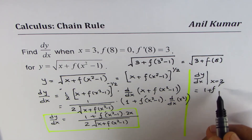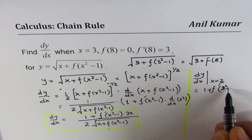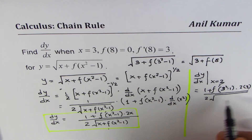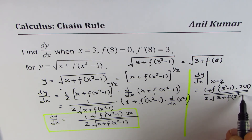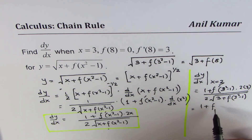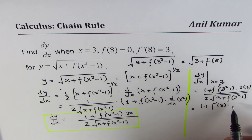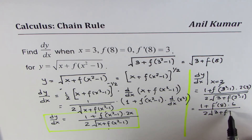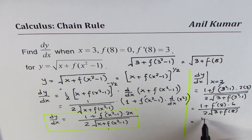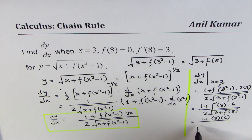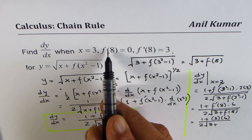Replacing x with 3, we get 1 plus f′(3² − 1) times 2 times 3, over 2 times the square root of 3 plus f(3² − 1). Since 3² − 1 is 8, this becomes 1 plus f′(8) times 6, divided by 2 times the square root of 3 plus f(8). We are given f′(8) equals 3 and f(8) equals 0, so we replace those values: 1 plus 3 times 6, divided by 2 times the square root of 3 plus 0.